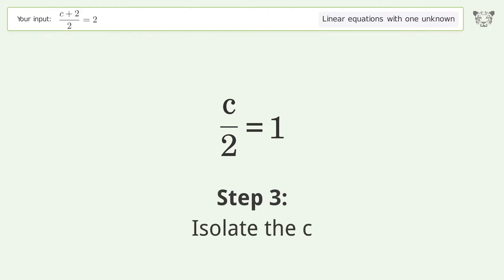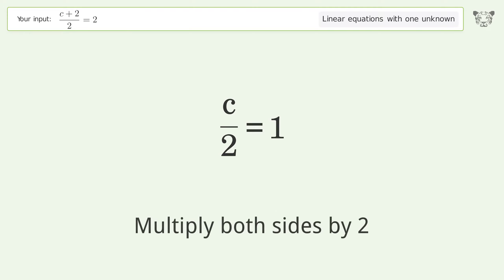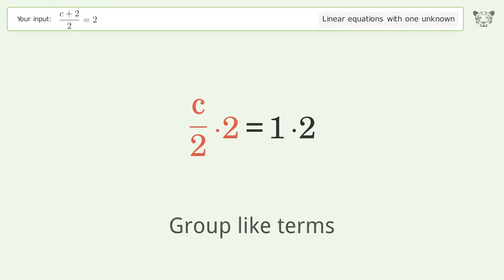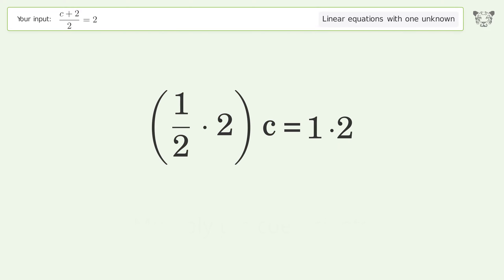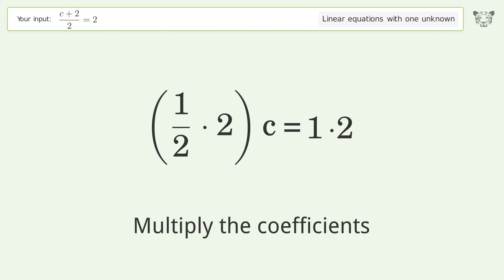Isolate c by multiplying both sides by 2. Group like terms, then multiply the coefficients.